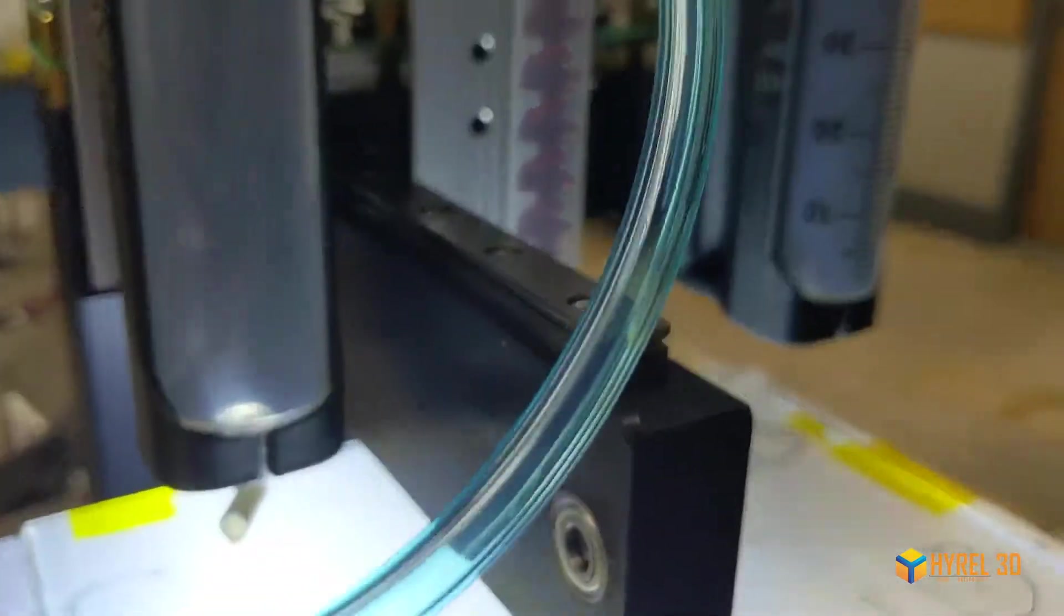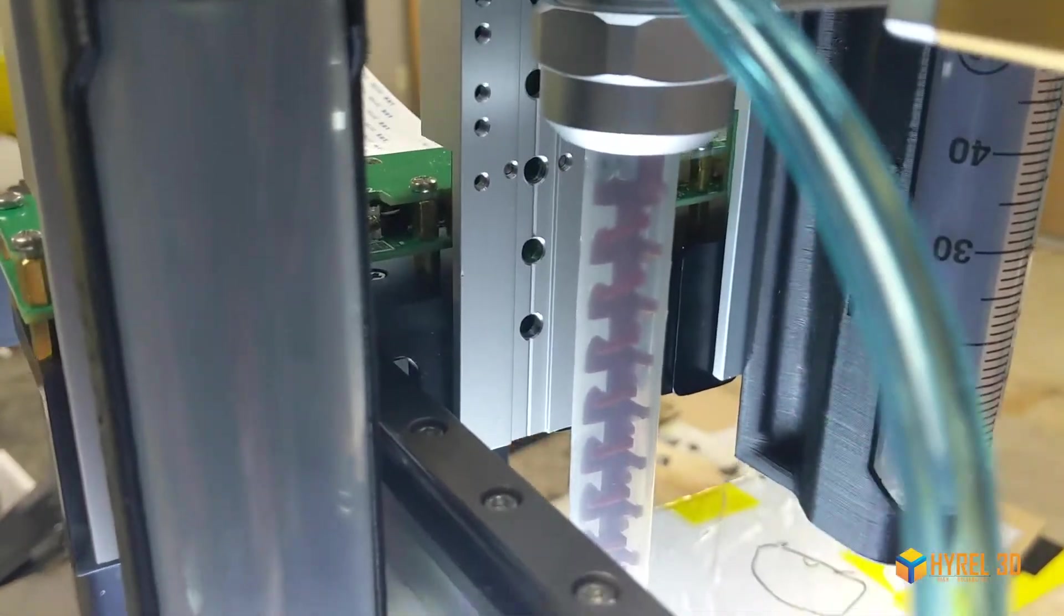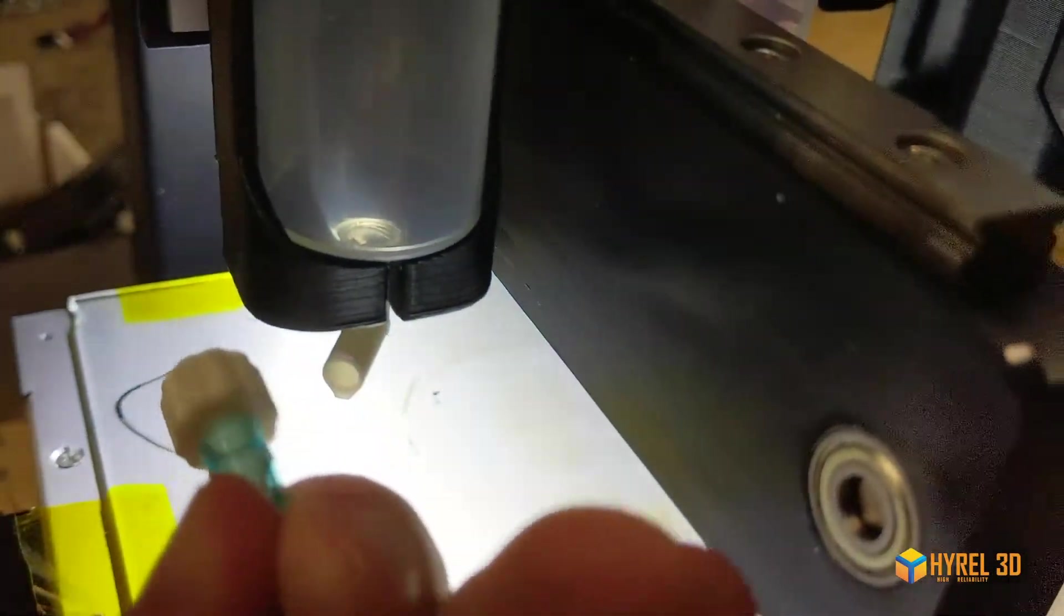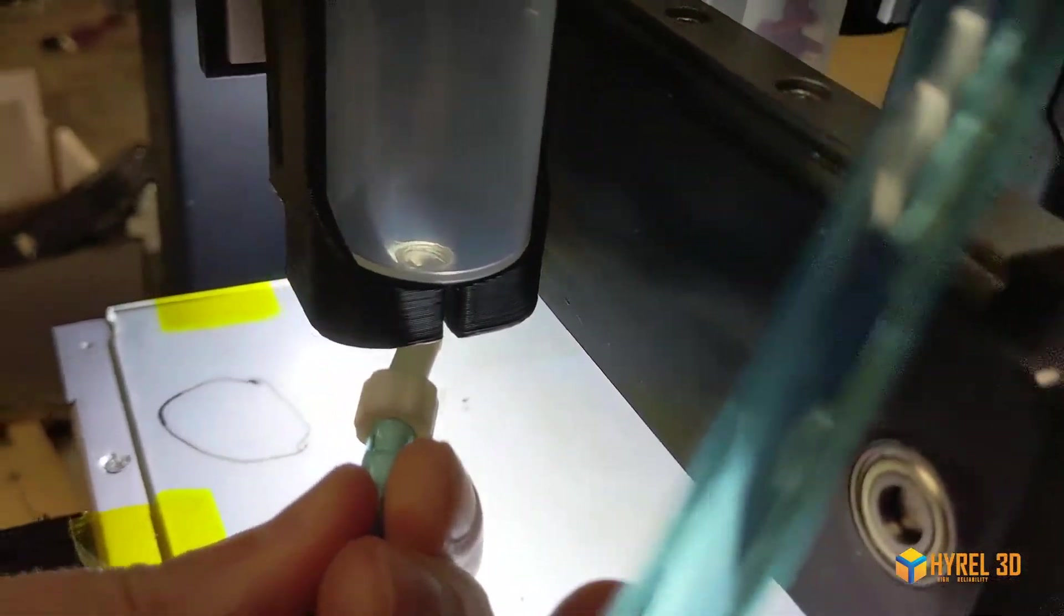We recommend pre-twisting the lure lock connector before attaching so that it's not under pressure to disconnect and it's also easier to connect. Do this for each connector.